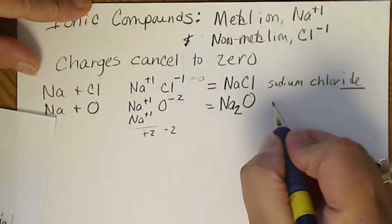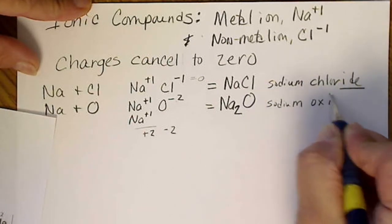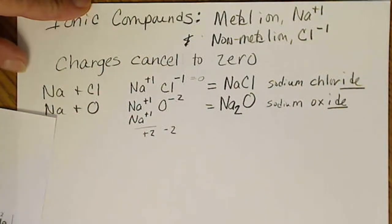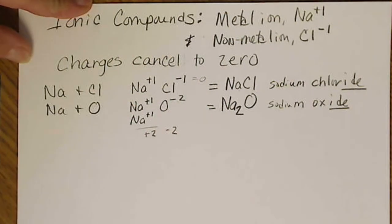And the name of this is sodium oxide. It has a different formula than sodium chloride because the charges are different.